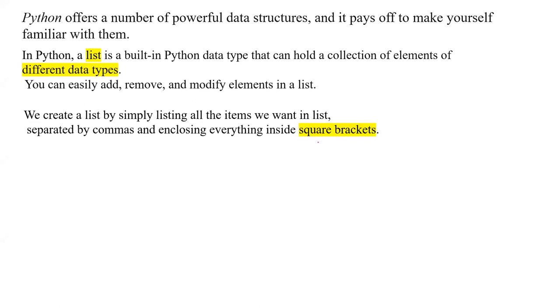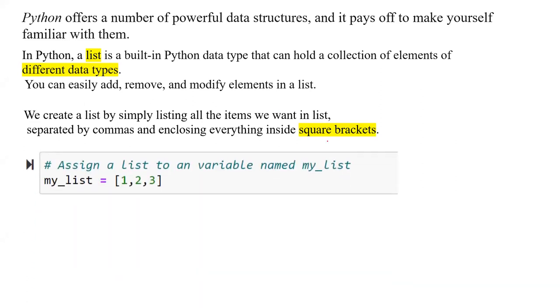To create a list, you basically use square brackets. For example, here we define a variable my_list, and it is square bracket, including one, comma two, comma three. It has three elements in it.